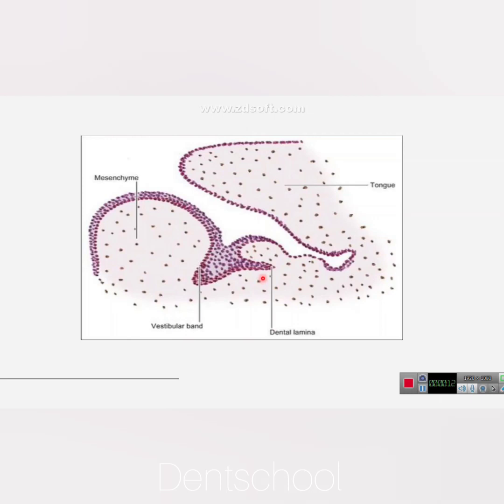As already discussed, the primary epithelial band divides into two processes: the outer process known as the vestibular lamina and the inner process known as the dental lamina. We can easily appreciate the developing tongue, the stomodeum, the oral ectoderm, and below that, the developing ectomesenchyme.